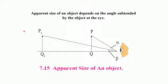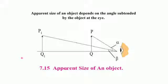The next topic is the apparent size of an object. Consider two objects PQ and P1Q1 at different distances from an observer — PQ is closer and P1Q1 is farther away. Both objects are the same size, but to the observer, PQ appears bigger than P1Q1. The reason is the angle subtended by the object at the eye.